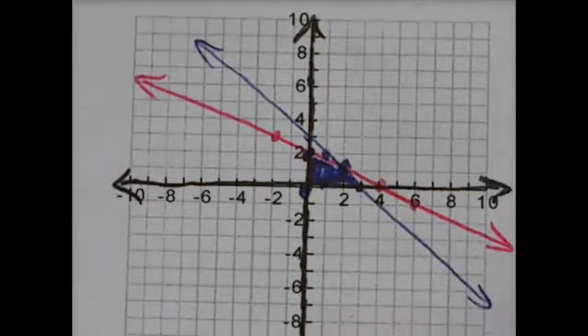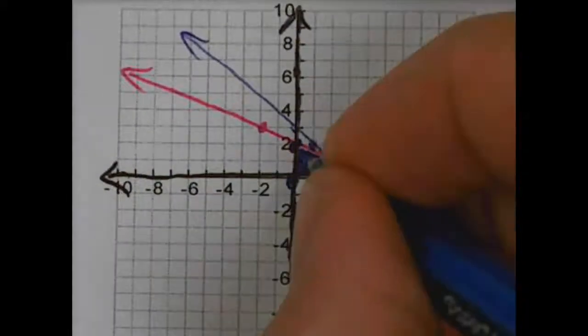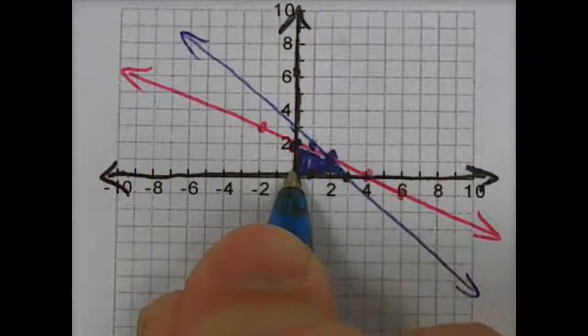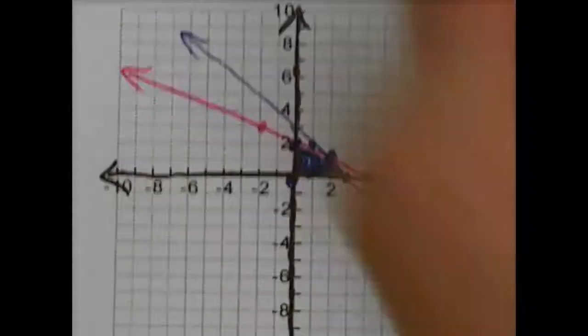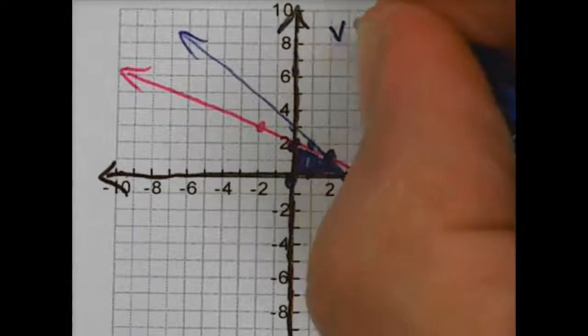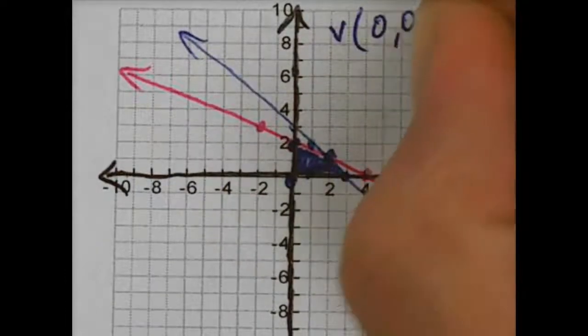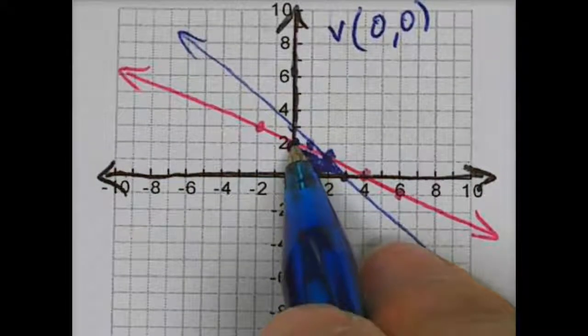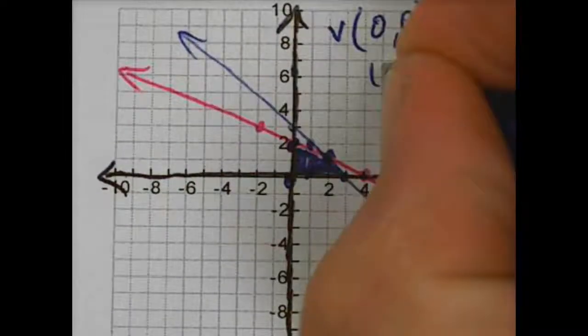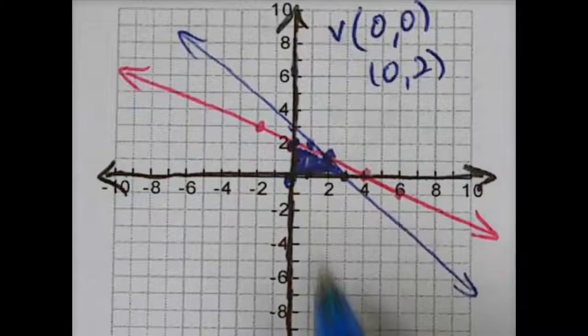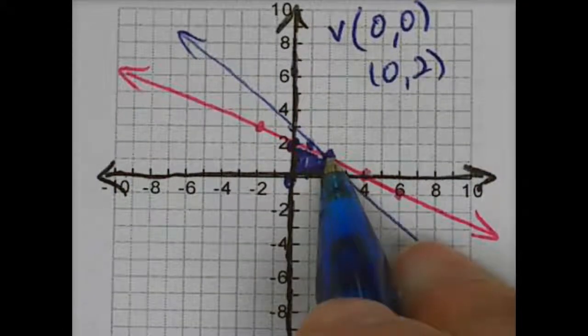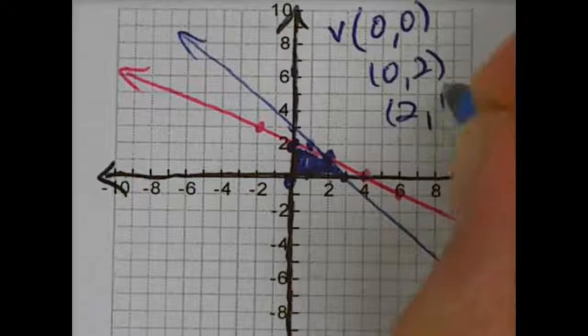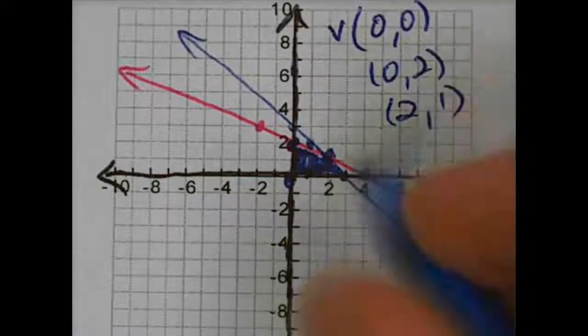So for our graph, we have one vertices at 0, 0. We have another vertices right here because two lines are meeting right there, so one of my vertices could be 0, 0. I have another vertices right here where more lines meet at 0, 2. I have another vertices at 2, 1, and I have one more vertices at 3, 0.